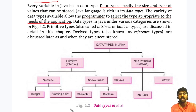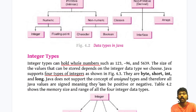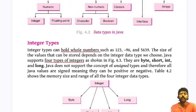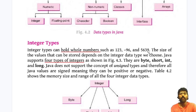You will learn all these concepts one by one in future classes. For now, I am explaining only the primitive data types — numeric and non-numeric. The first type is called integer data types. Integer data types can hold only whole numbers — they can be positive or negative, but they never store any fractional part. Examples include 1, 2, 3, -96, or 5639.